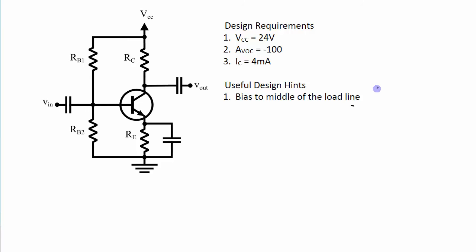So biasing to the middle of the load line means that I want to set it up so that my collector emitter voltage is about 12 volts and my IC sat or the saturation current is 8 milliamps. This 12 volts comes from being half of VCC and this 8 milliamps comes from the requirement that my operating point for my collector current needs to be 4 milliamps. So if that was to be in the middle of the DC load line then my saturation current needs to be at 8 milliamps.